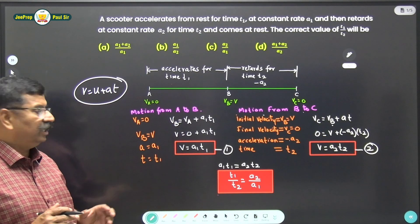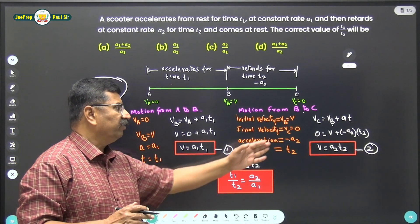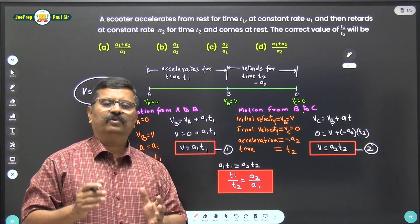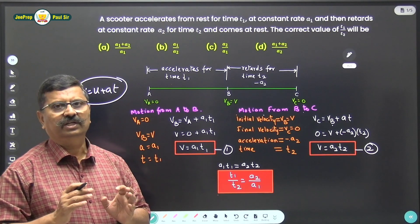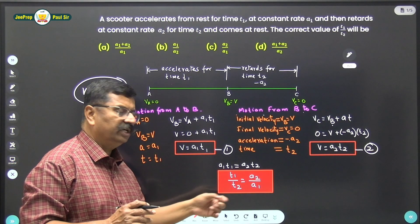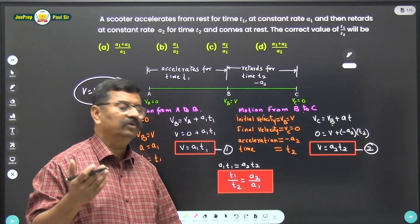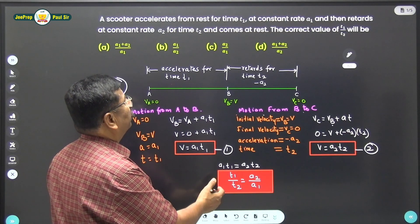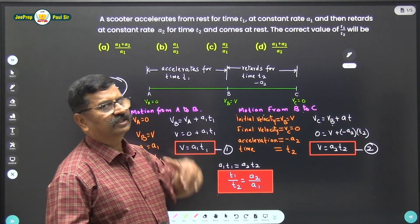Now you must have realized that equation 1 and equation 2 give the same thing, that is velocity v. So I will equate these two equations and I get t1 upon t2 is equal to a2 by a1. Hence, the correct option is C.